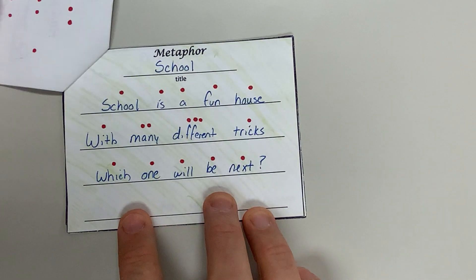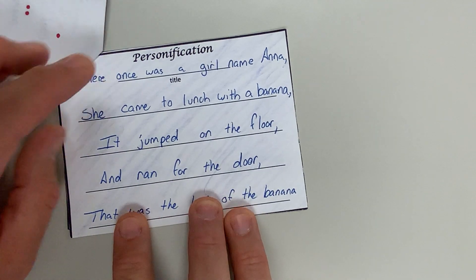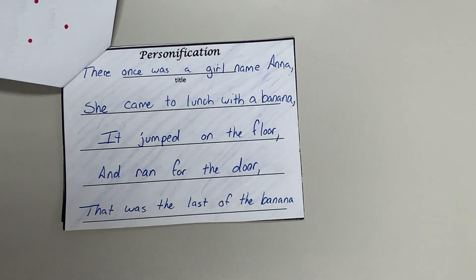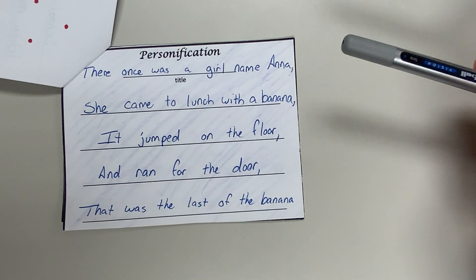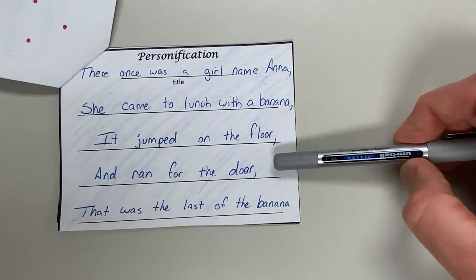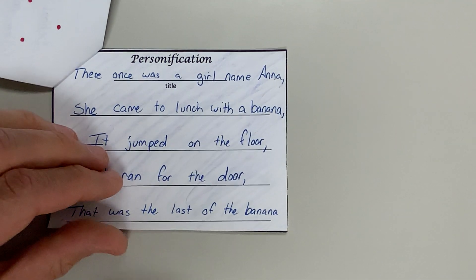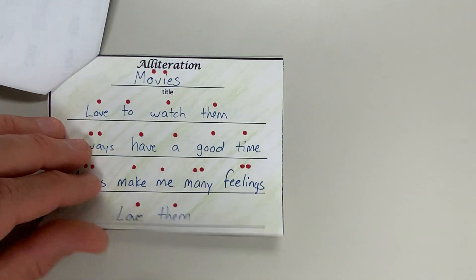Moving along, I also wrote a limerick that includes personification — it's a little silly. The biggest thing with personification is you follow the limerick rhyme scheme: AABBA, meaning the first two lines rhyme, lines three and four rhyme together, and the last line rhymes back with the first two. I'll show you just a couple more examples of student work without putting names on them.